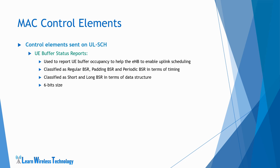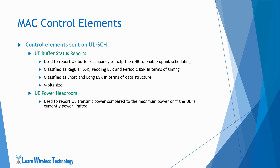The second uplink control element is the Power Headroom Report. It is used to report UE transmit power compared to the maximum power, or if the UE is currently power limited. The power headroom report provides the serving E-NodeB with information about the difference between the nominal UE maximum transmit power and the estimated power for uplink shared channel transmission — in other words, how much transmission power is left for the UE to use beyond the power being used for current transmission. The size of the power headroom report is 8 bits. The power headroom value ranges from minus 23 dB to 40 dB, where a negative value indicates the UE is power limited (already transmitting at maximum power), and a positive value indicates the UE still has power available for new transmissions.